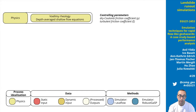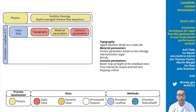We do so by starting with idealizing the physical process. We idealize the process of a flow-like rapid mass movement with Voellmy Rheology and depth-averaged shallow flow equations. One needs two friction parameters: the dry Coulomb friction coefficient and the turbulent friction coefficient. We have used a GIS-based and open-source computational framework in this study.